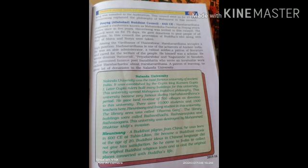At the end of all religious councils, a procession of Buddha idol along with the Shiva and Surya idols were taken.